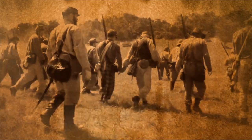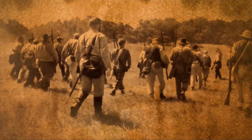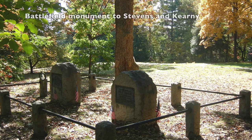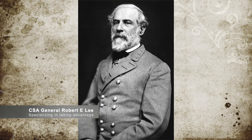By 6:30 p.m. that evening, Pope's army had successfully escaped Stonewall Jackson and Longstreet, with the help of the recently slain Kearney and Stevens. Lee took advantage of Pope's retreat as well by turning his entire army northwest and invading the North itself.